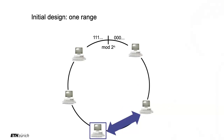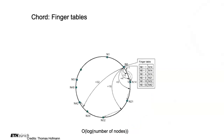That's the initial design with replication — I can duplicate and store values at multiple places. The original protocol that Dynamo follows is inspired by Chord. In Chord, every node keeps track of nodes at powers-of-two distances from itself: the next node, the node at distance two, four, eight, and so on.